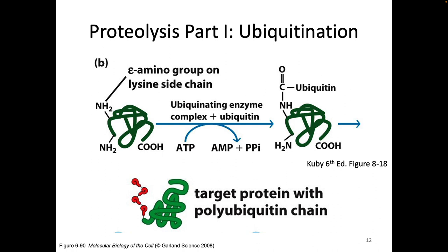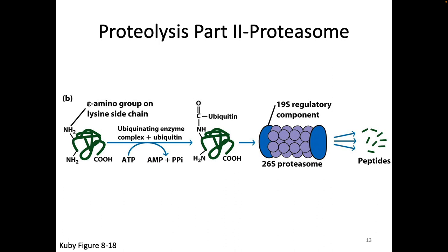If a protein has a ubiquitin added to it, that protein is going to be taken to an organelle in the cell called the proteasome. We know the proteasome is an organelle because it has 'some' at the end of its name. But if you look at the beginning of its name — 'protease' — this is the protease organelle, the organelle that breaks down proteins. So if we have a protein that gets ubiquitins added to it, it gets taken to the proteasome and degraded into peptides. This is how we do proteolysis for class 1.